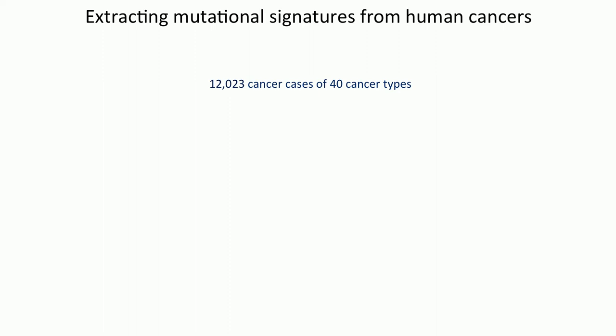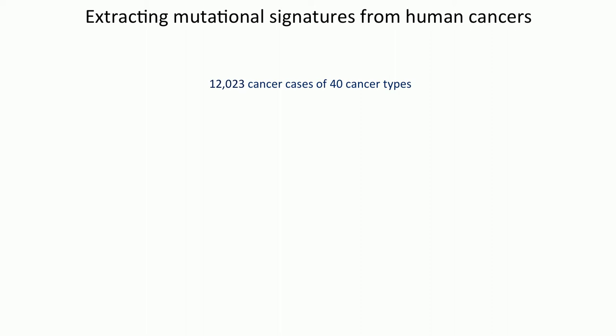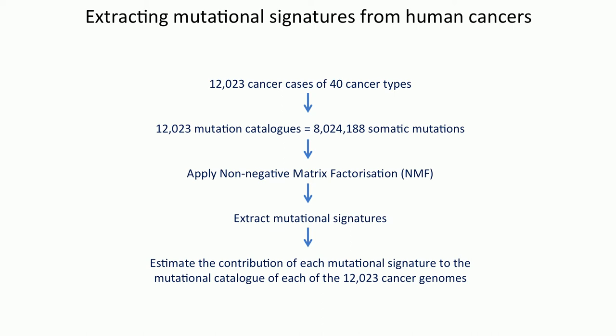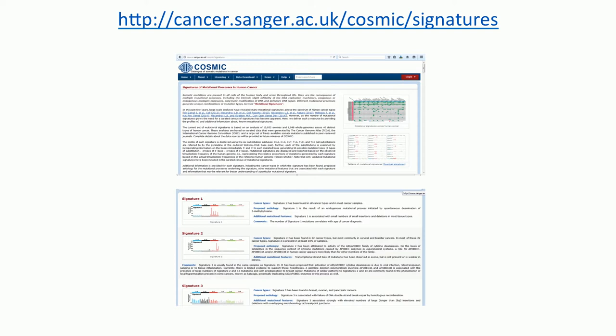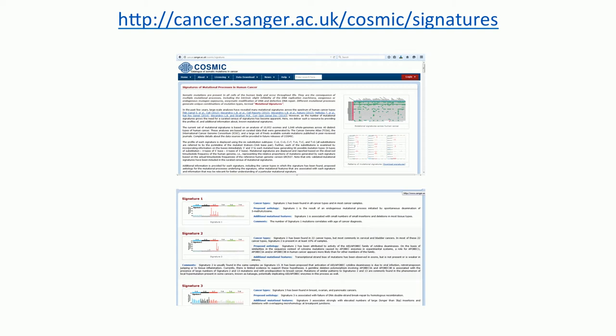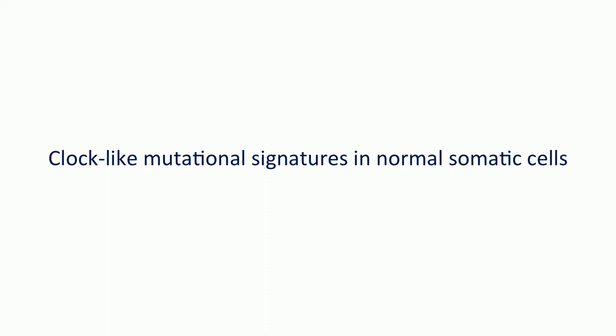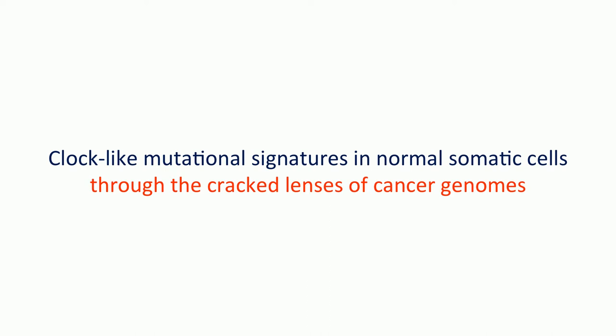We applied the non-negative matrix factorization approach, extracted mutational signatures, and estimated the contribution of each signature to each sample. Rather than discussing all signatures — which are available on the COSMIC website — I'll focus on a specific set: the clock-like mutational signatures operative in normal somatic cells. We're going to look at these clock-like signatures through the cracked lenses of cancer genomes. The mutations from the normal lineage, when the cancer cell was still normal, are also imprinted, allowing us to infer clock-like signatures mathematically and see how they act in different cell types.